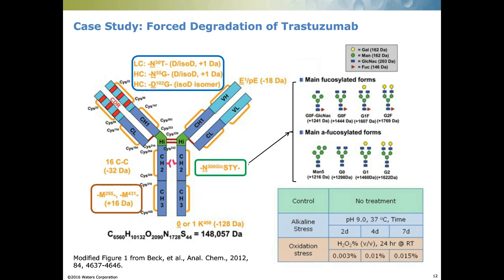To demonstrate our workflow, we chose trastuzumab as an example. From previous publications, we know that aspartic isomerization can cause loss of potency, and methionine oxidation in the constant domain can affect interactions with Fc receptors. To monitor the change of these product attributes, we did a stability study by treating the molecule under different stress conditions, including acidic and oxidation stresses. We used the same set of samples for both high-resolution mass spec and QDA analysis.